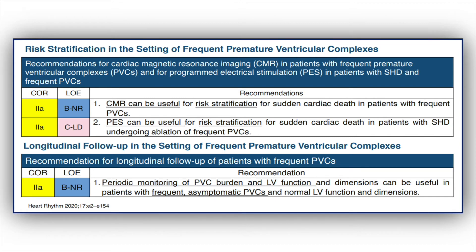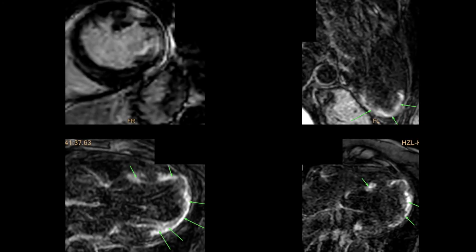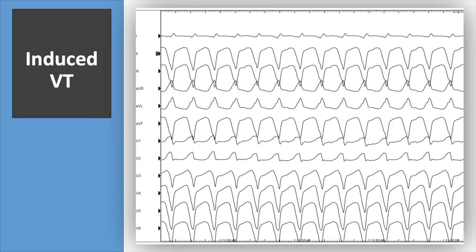Now let's take a look at the results of MRI and also the programmed electrical stimulation in our patient. On cardiac MRI, we see that she has extensive late gadolinium enhancement. During programmed electrical stimulation, we induced monomorphic fast VT — hemodynamically unstable VT — with a cycle length of 290 milliseconds.